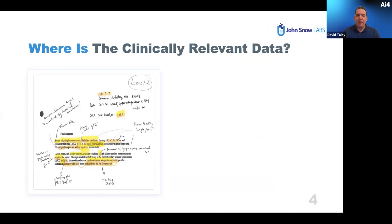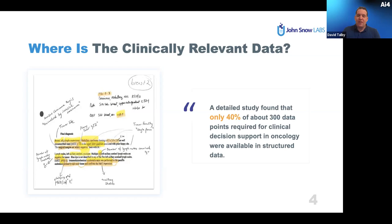Something somewhat unique to healthcare compared to retail, e-commerce, or cybersecurity is that in many specialties — and this example is from oncology — most of the clinically relevant data is only going to be in free text. A top five pharma company found that out of about 300 data points needed to make clinical decisions, only 40% were available in structured data. Everything else was not only in text, but completely unstructured, specialty-specific, and requiring OCR.